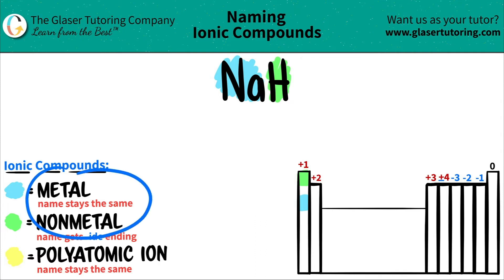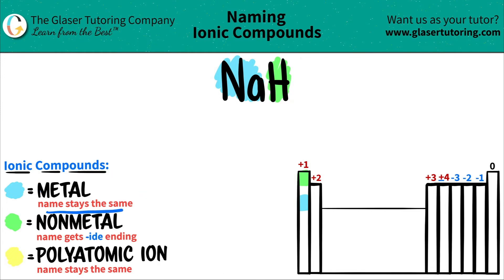Now we can start writing the name. The metal name always stays exactly the same. Sodium came first in the compound, so it has to be named first. It's just going to stay sodium because sodium is the metal — the metal name stays exactly the same.